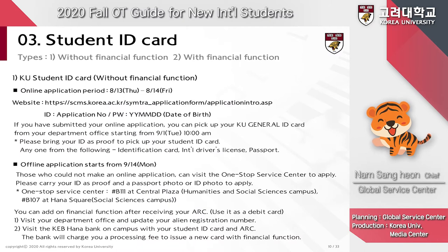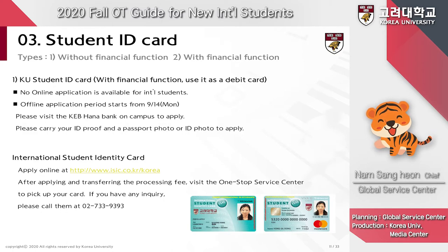There are two types of student ID cards available: a regular student ID card and a student ID card with a financial function added onto it. The application period for the regular one is already over. If you applied online, you can pick up your student ID card in person once the fall semester starts. There is also an offline application option, starting on September 14th. You must visit the one-stop service center in person to apply with your ID and a passport photo of yourself.